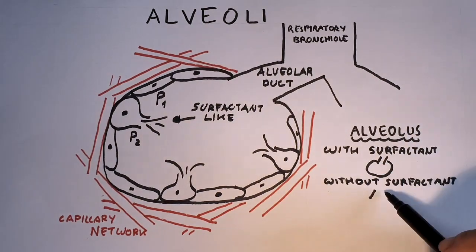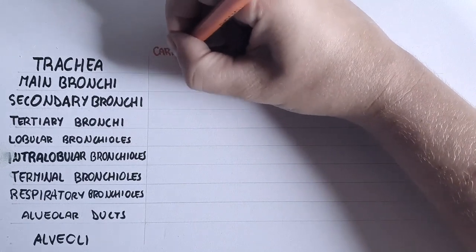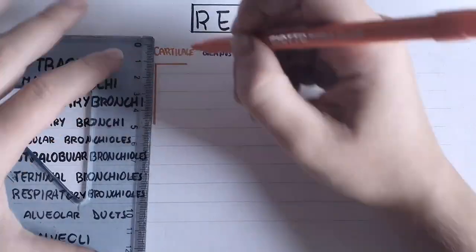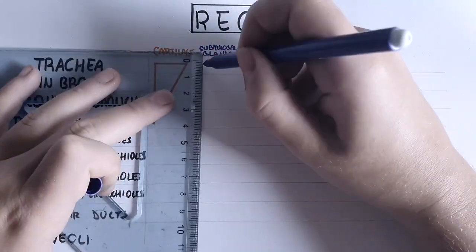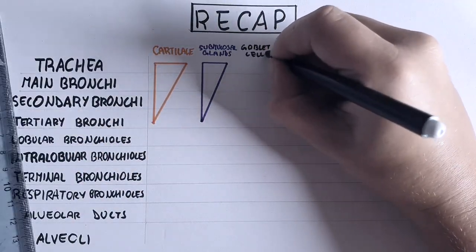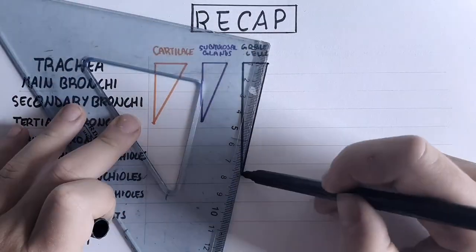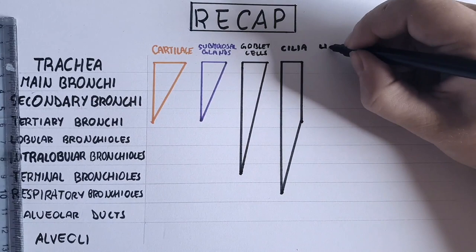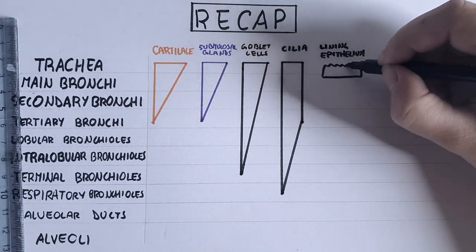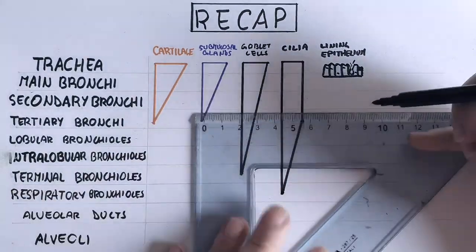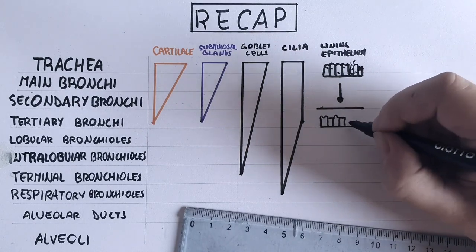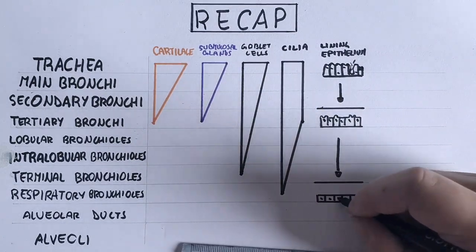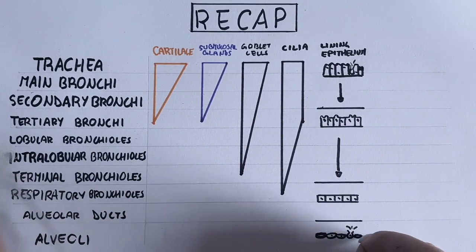So to make a quick recap, some components of the bronchial tree decrease with the branching, such as cartilage and glands in the submucosa. In fact, they disappear starting from the bronchioles. Goblet cells, which stop at the level of tertiary bronchi, and cilia, as they decrease in quantity after the tertiary bronchioles and disappear from the respiratory bronchioles. The lining epithelium changes morphologically, becoming thinner and thinner going down the bronchial tree. In fact, it maintains the characteristics of the respiratory epithelium in the trachea and the main bronchi, then we notice a change into simple columnar epithelium in the segmental bronchi, simple cuboidal in the respiratory bronchioles, and finally simple squamous in the alveoli.